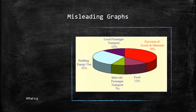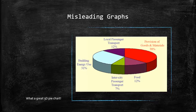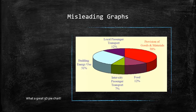What a great 3D pie chart. Which of the two categories, local passenger transport or food, appears larger? Food? You are wrong. They are both 12%. With the recent advancements in technology, it is very easy to produce a 3D image with the press of a button. However, rarely is the use of such graphs justified, so be aware.